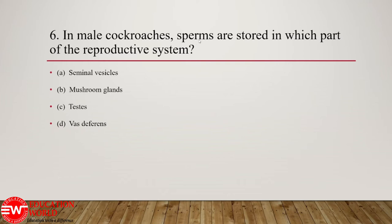Question number 6: in male cockroach, sperm are stored in which part of the reproductive system? In the male cockroach, sperm are stored in special vesicles known as seminal vesicles. Mushroom glands are accessory reproductive glands in the cockroach, playing an important role in the formation of spermatophore. Testes are the male gonads, and vas deferens is the male genital duct. Hence the correct option is seminal vesicles.